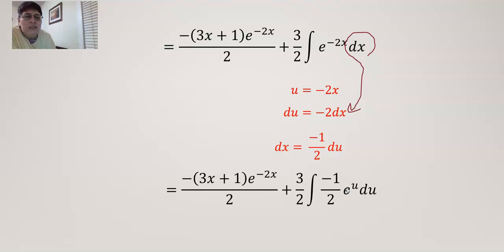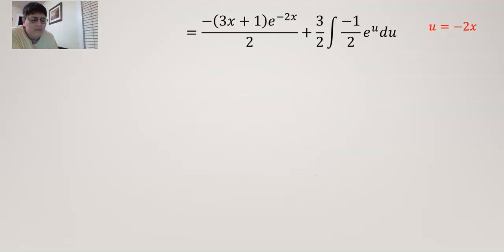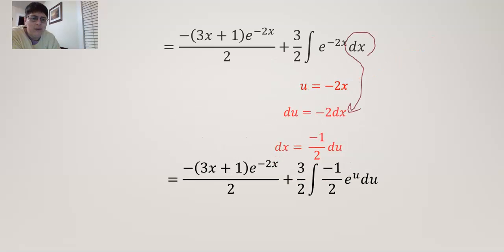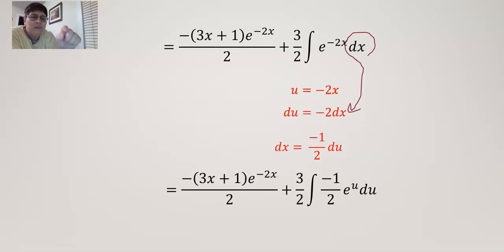So when we substitute in, we're going to have e^u. And then what this is for dx we're going to put in right there, so it looks like -1/2 e^u du. Now you can proceed down. Don't forget what u is.